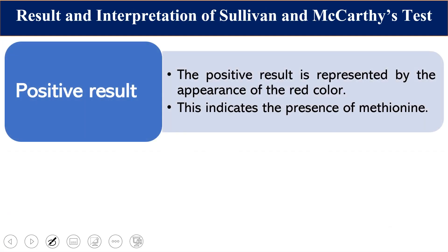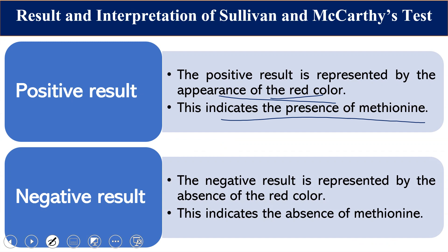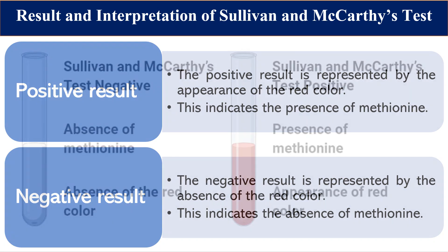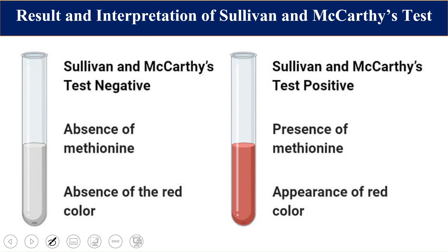For results: a positive result is the appearance of red color, which indicates the presence of methionine. An absence of red color indicates the absence of methionine, which is a negative test. So either a positive or negative result is obtained — a positive Sullivan and McCarty test shows red color, and a negative test shows no color.